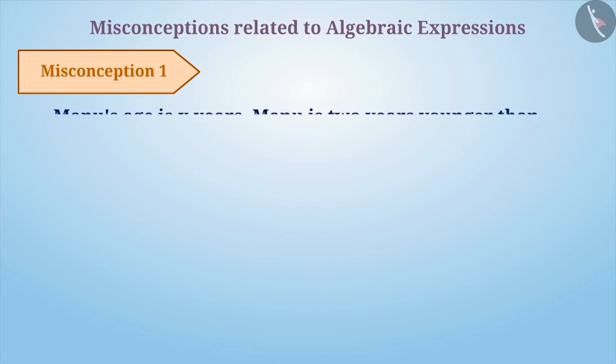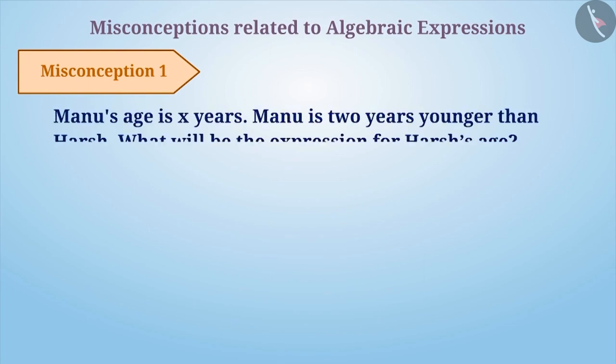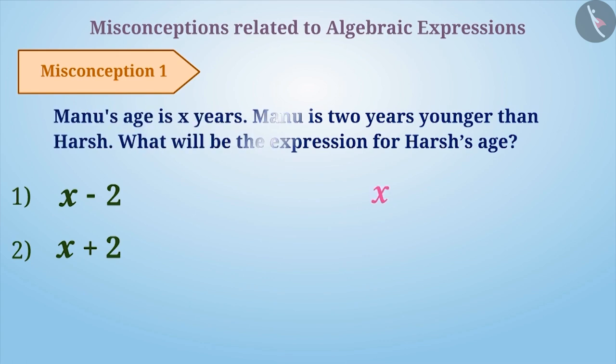Misconception 1. Manu's age is x years. Manu is 2 years younger than Harsh. What will be the expression for Harsh's age? Many times, the information is expressed in the same way as it is read. With this understanding, the answer x-2 is obtained, which is the wrong answer.